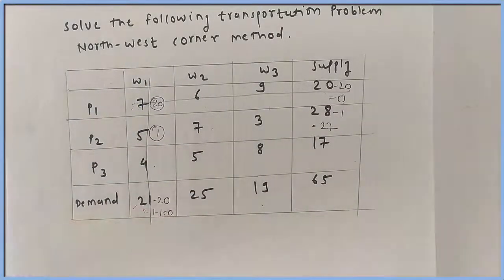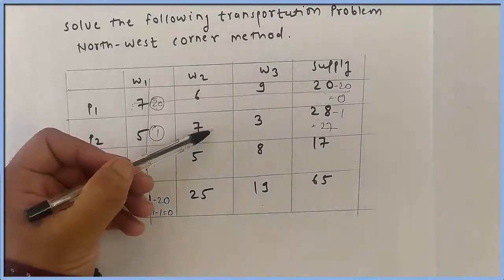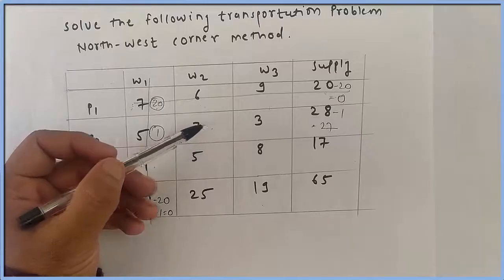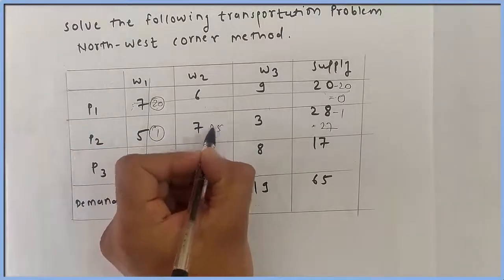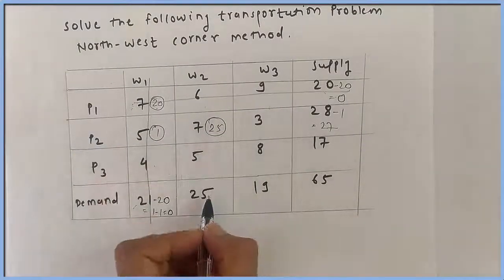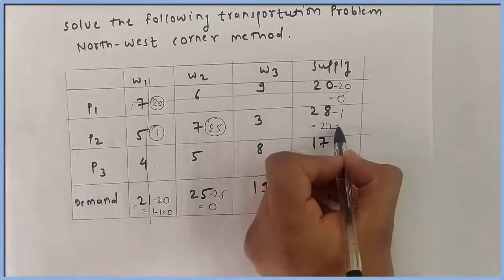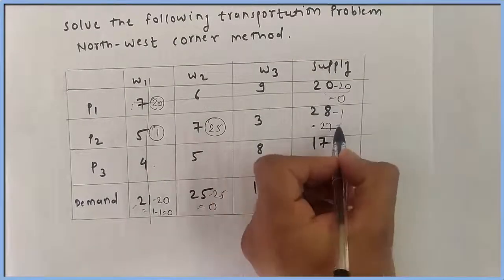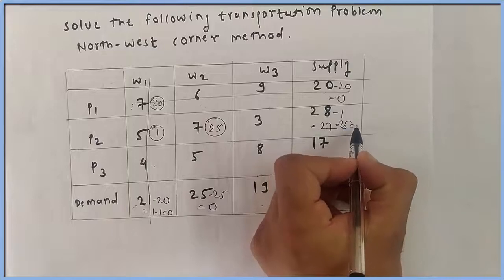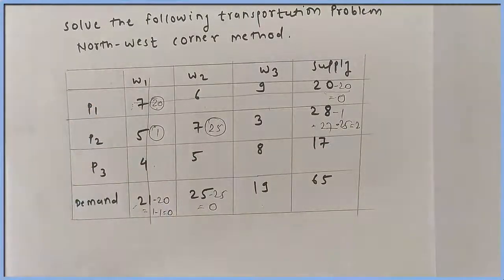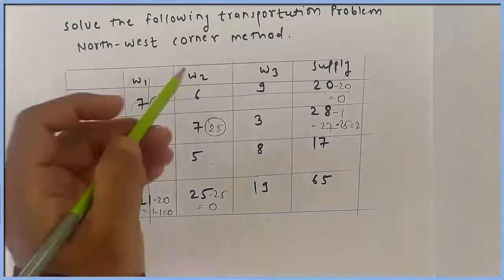Now look at the remaining cells. The Northwest corner is this cell, where supply is 27 and demand is 25. We allocate the lesser unit, which is 25. After this allocation, demand becomes 25 minus 25 equals 0, and supply becomes 27 minus 25 equals 2. The W2 column demand is now 0, so we cancel this column.